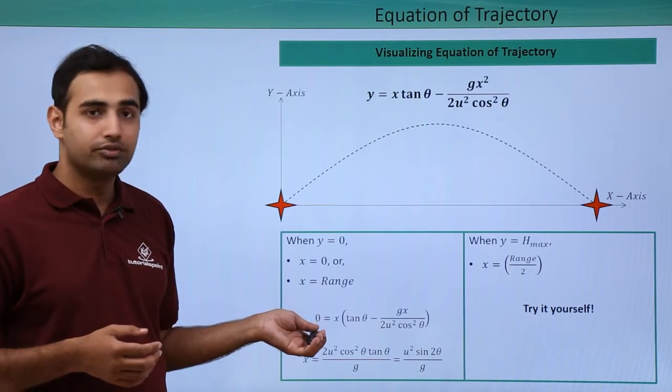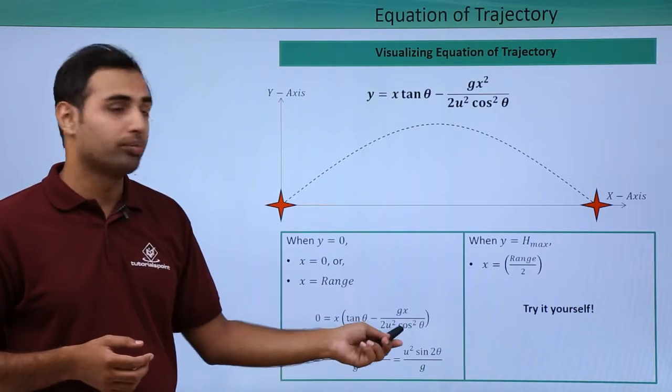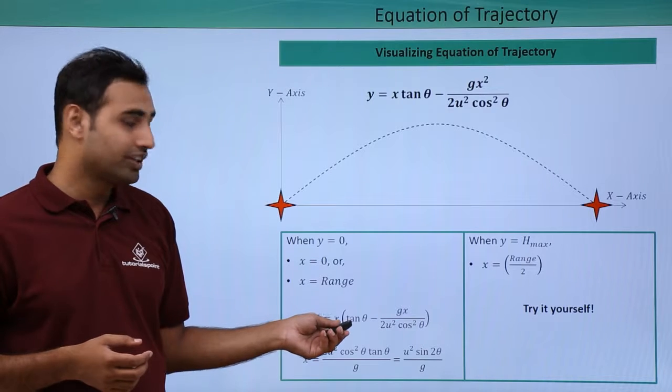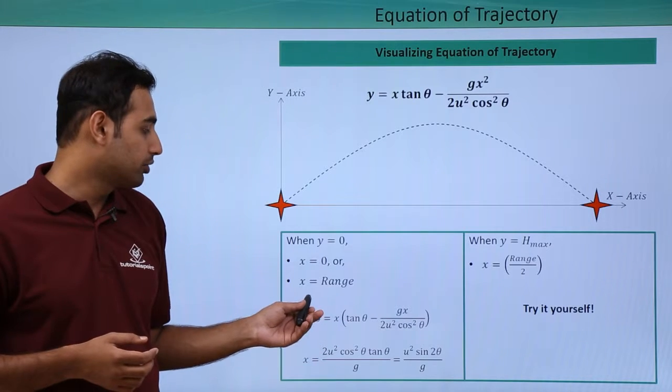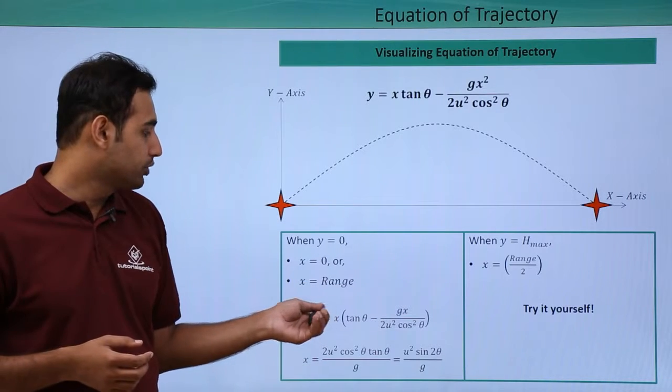So if I put y is equal to 0 here, then I have this equation. I take x common and I ultimately obtain this. Now from here, it's very clear that either x is equal to 0 or this entire expression is equal to 0.